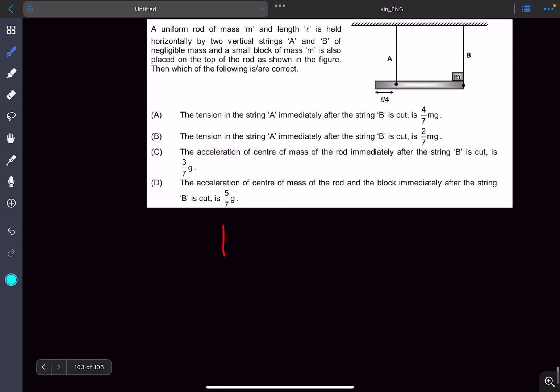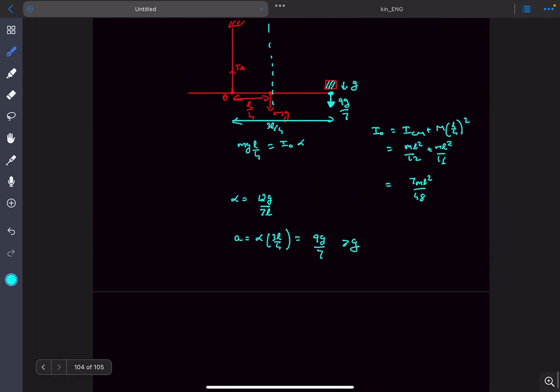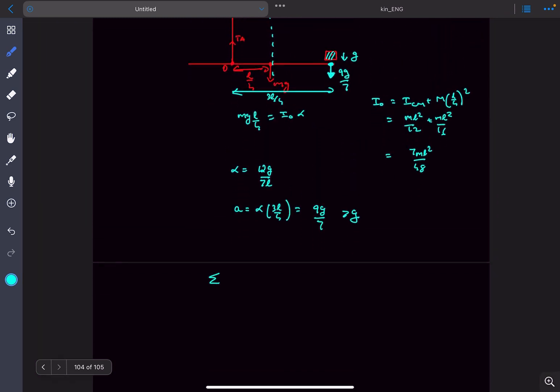Now moving on to the options, the first option was to find the tension and for that we can just use F equals MA. We can write sigma F_y equal to M times acceleration of the center of mass in the y direction.